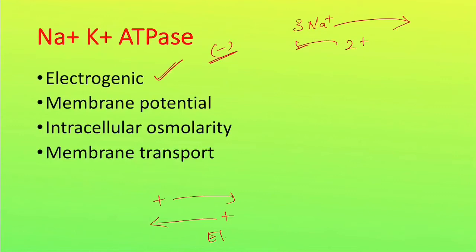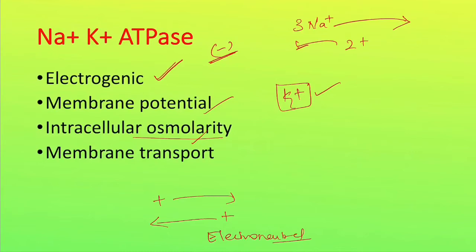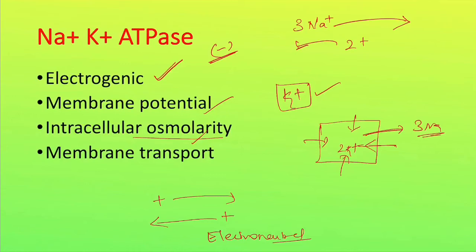Another function is maintaining membrane potential — it maintains the potassium concentration essential for membrane potential, which we will discuss in membrane potential lectures. Intracellular osmolarity is also maintained by the sodium-potassium pump; it removes extra solutes that keep accumulating in the cell by moving three ions outside and taking only two potassium ions, so extra solutes are continuously removed and water is also removed. This is essential for maintaining intracellular osmolarity. If the sodium-potassium pump is blocked, the cell will accumulate more solutes and eventually swell and rupture.